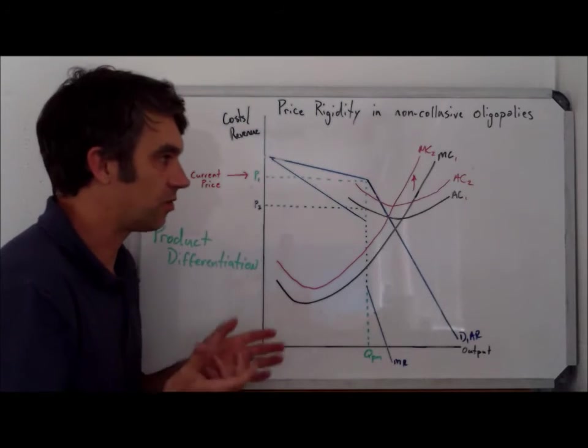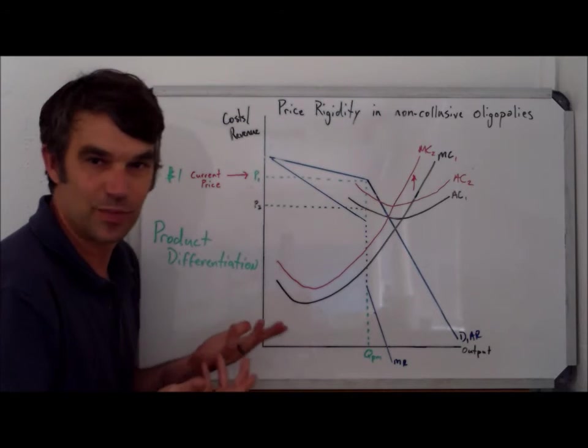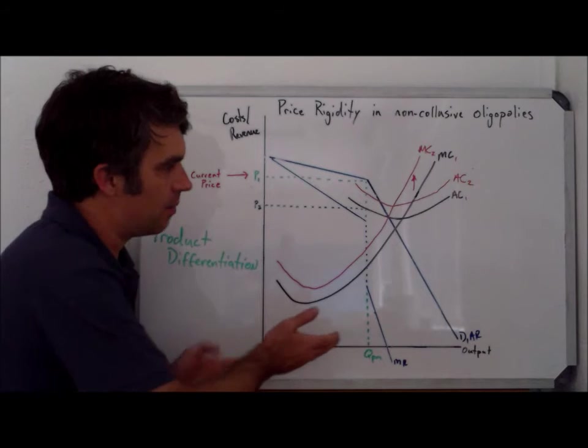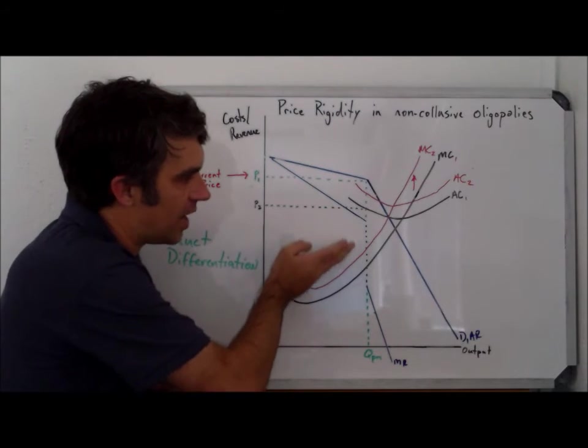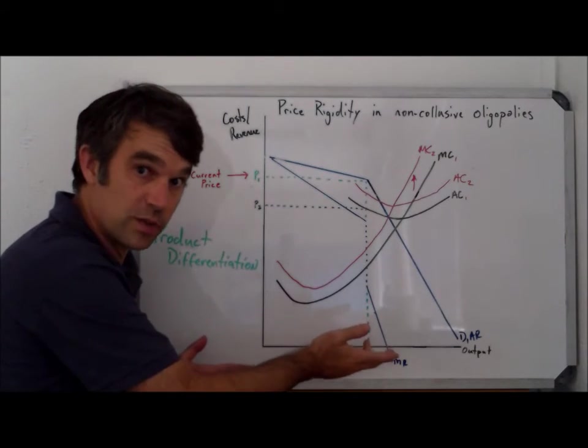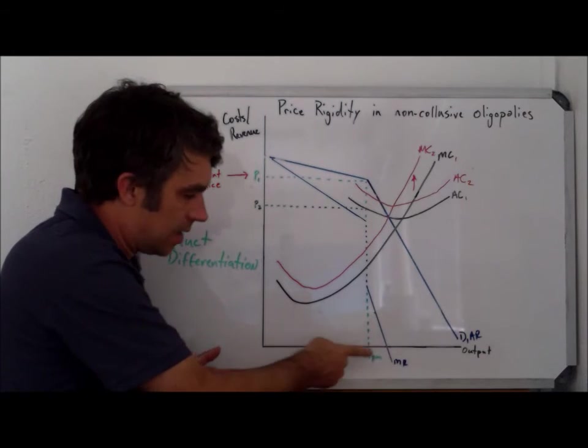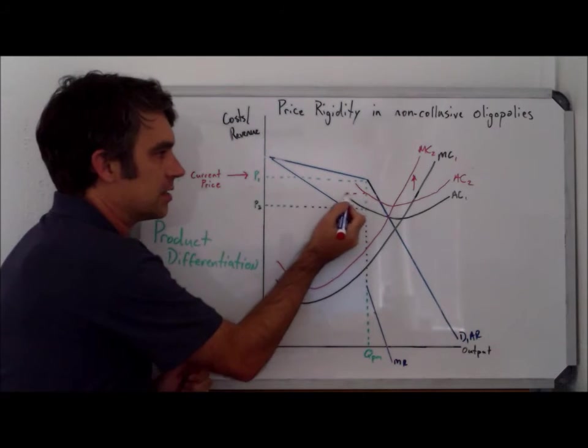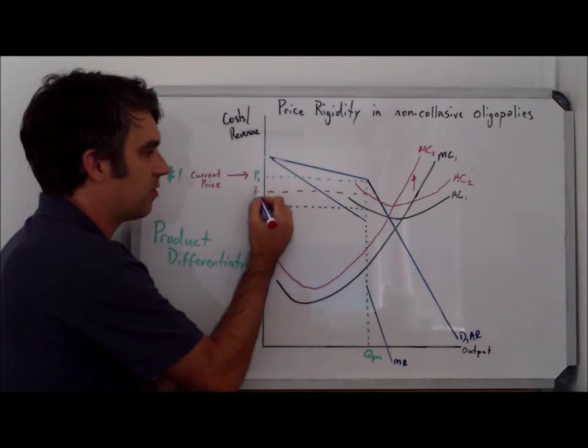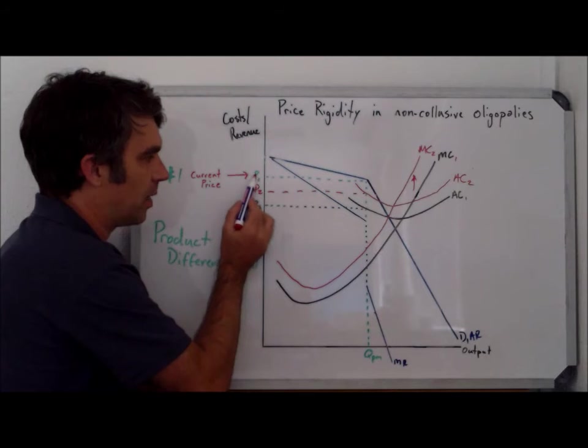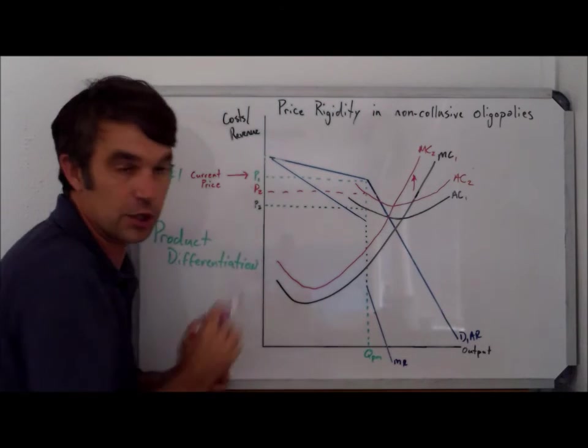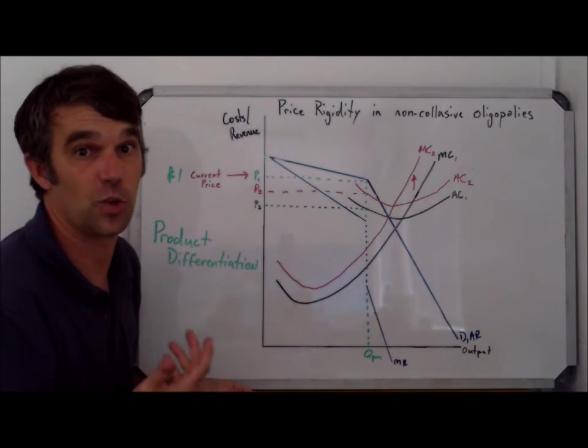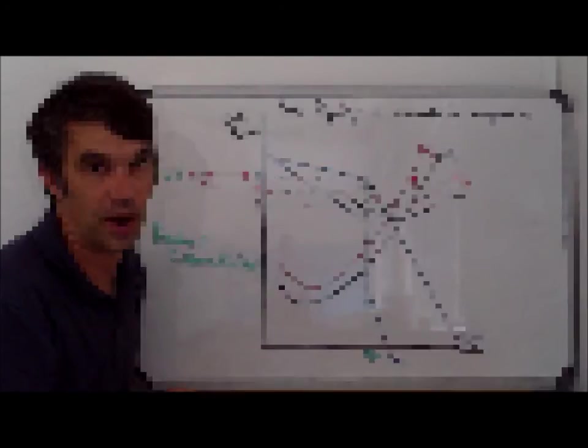So now we can see that the firm, Coke in this case, is in a bit of a bind. They were making abnormal profit between P1 and P2, but because of the shift of marginal cost, their abnormal profit is going to be somewhat taken away. At QPM, we see the new average cost is there, which means now this firm is only going to make abnormal profit of P1 to P2 times QPM. And obviously, this is a situation that the firm doesn't want to find itself in. It likes to make abnormal profit.